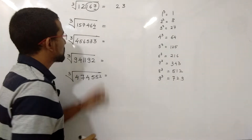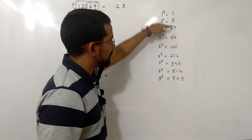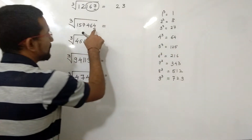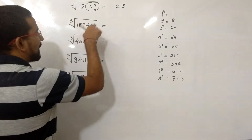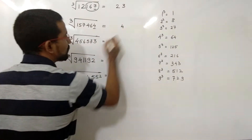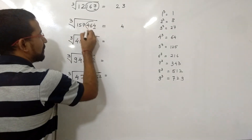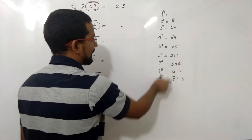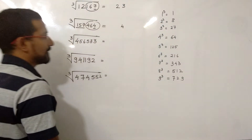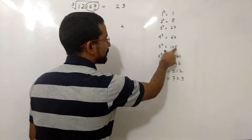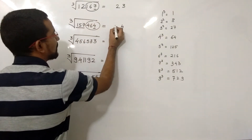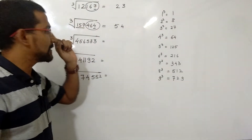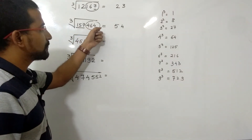Now we take another example: 157464. The unit place value is 4. The cube of 4 is 64, so the unit place of the cube root will be 4. Now we leave out the last 3 digits. The remaining digit is 157. Is there any cube equal to 157? No. Less than 157 is 125, and 125 is the cube of 5. So the answer is 54 — the cube root of 157464 is 54.